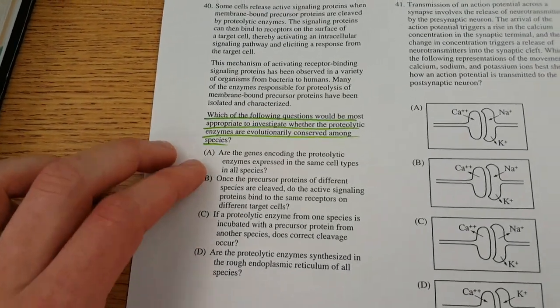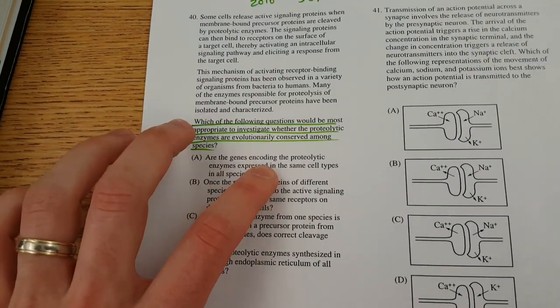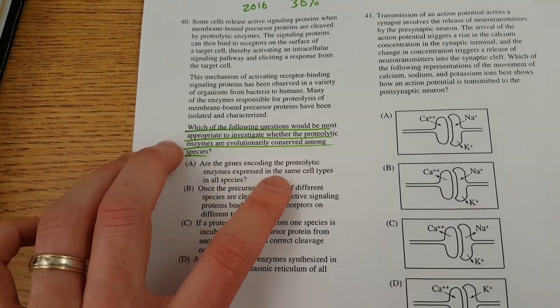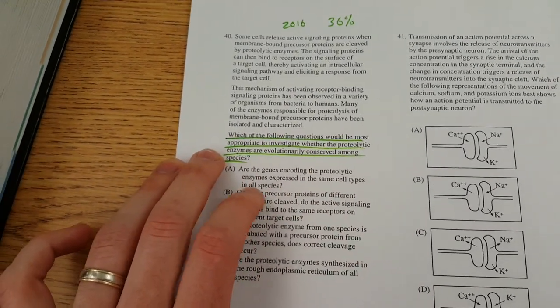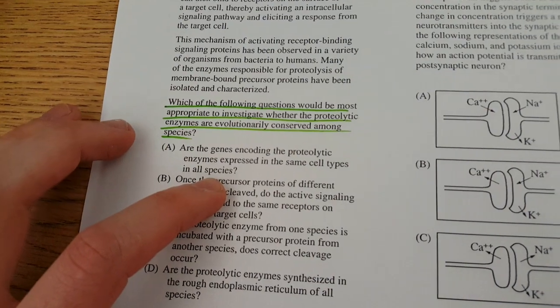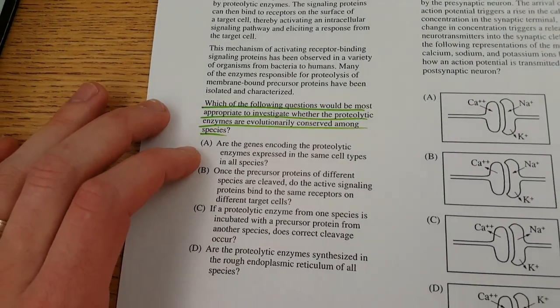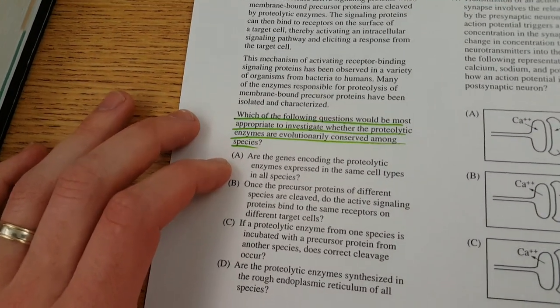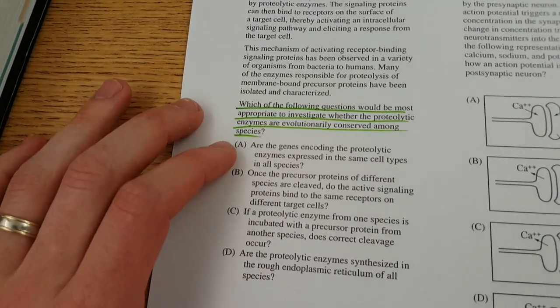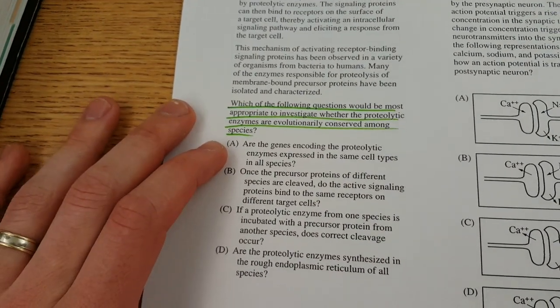So let's consider A, B, C, and D here. A says, are the genes encoding the proteolytic enzymes expressed in the same cell types in all species? And at first glance, that seems okay. That's almost the definition of what being evolutionarily conserved means. So let's keep that as a possible answer as we move forward here.